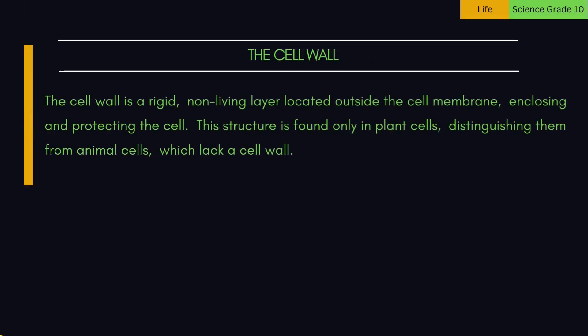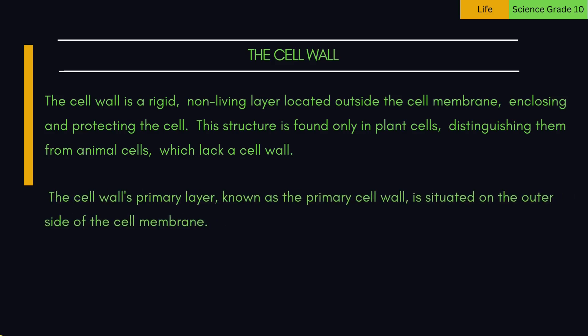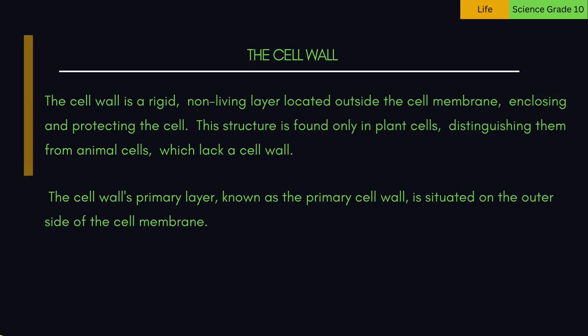The cell wall is a rigid, non-living layer located outside the cell membrane, enclosing and protecting the cell. This structure is found only in plant cells, distinguishing them from animal cells, which lack a cell wall. The primary cell wall is situated on the outer side of the cell membrane.